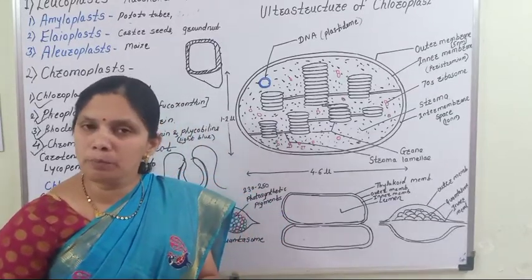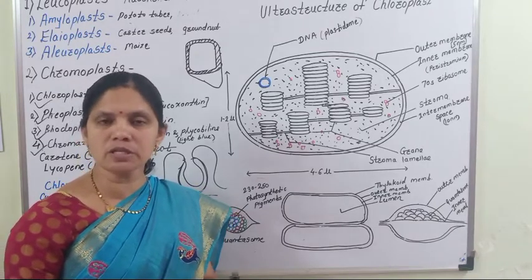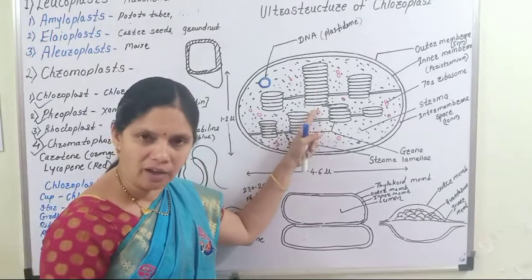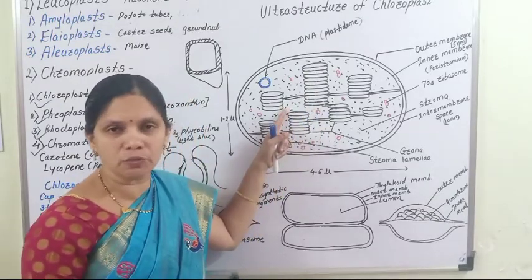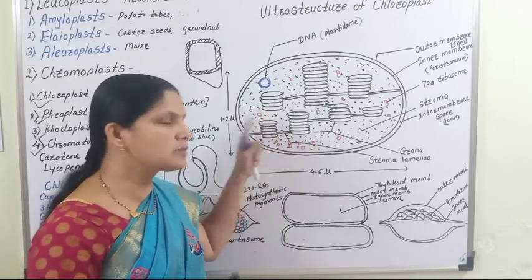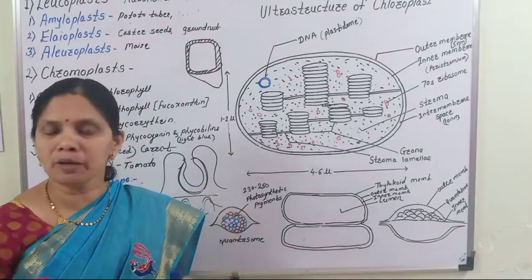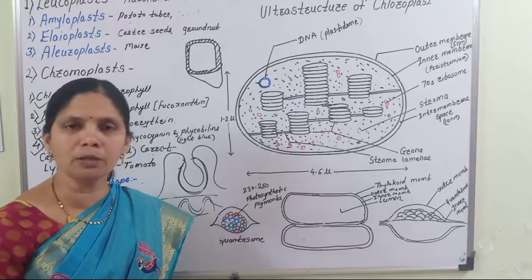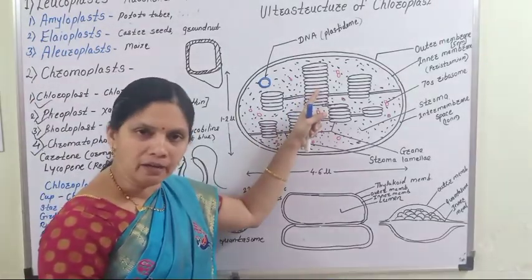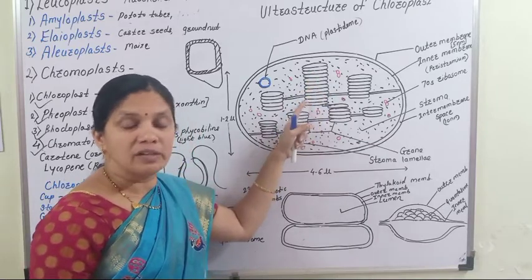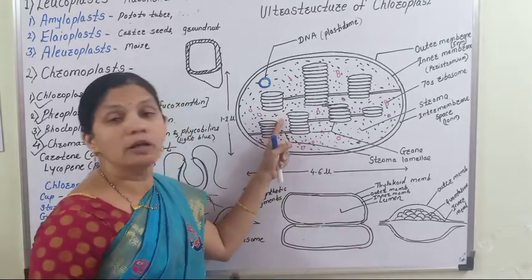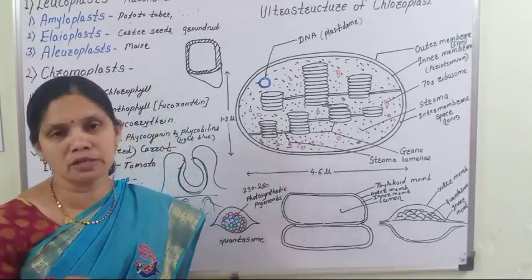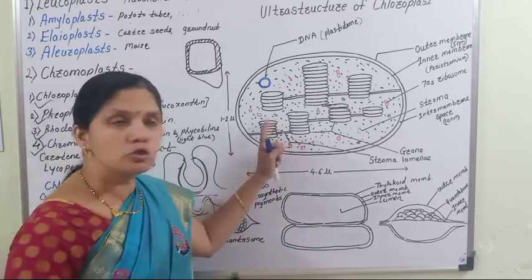The chloroplast performs the function of photosynthesis, which is divided into two main stages: light reaction and dark reaction. The light reaction takes place in the grana, involving cyclic and non-cyclic photophosphorylation — that is, synthesis of ATP and NADPH2. The dark reaction — C3 and C4 pathway, which is the fixation of carbon dioxide — takes place in the stroma, because all enzymes essential for the dark reaction are present there.